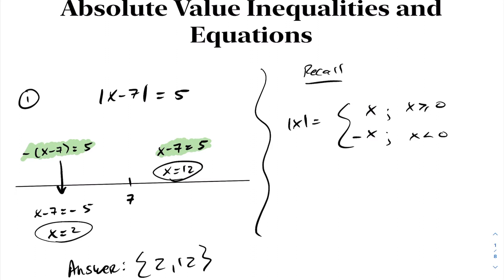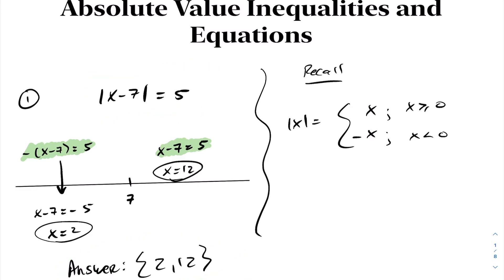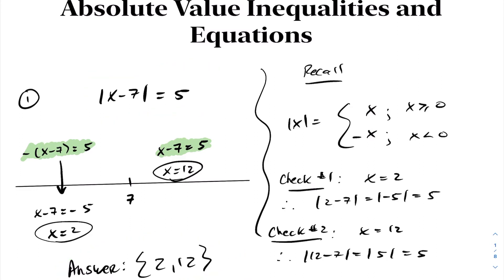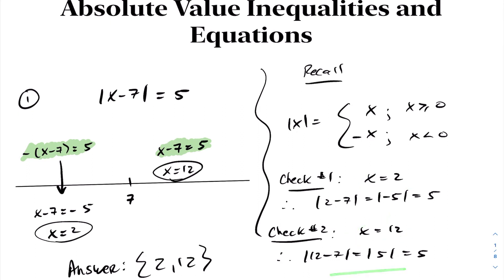Notice we can do a quick check by substituting these in to our original equation to see if it satisfies. When I let x equals 2 and sub that in, we get left-hand side equals right-hand side. Likewise, when I let x equals 12, the same thing happens: left side equals right side. Let's look at another example of solving absolute value equations.